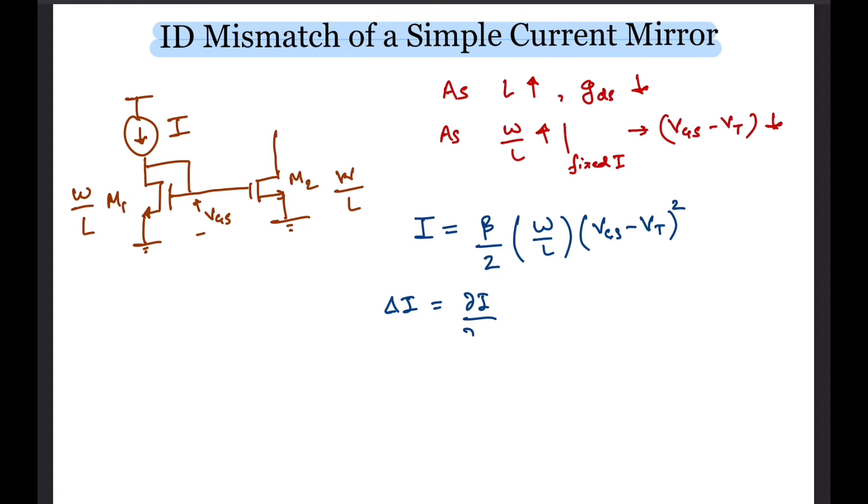From the expression of I we can express delta I as del I over del beta times delta beta plus del I over del VT times delta VT.